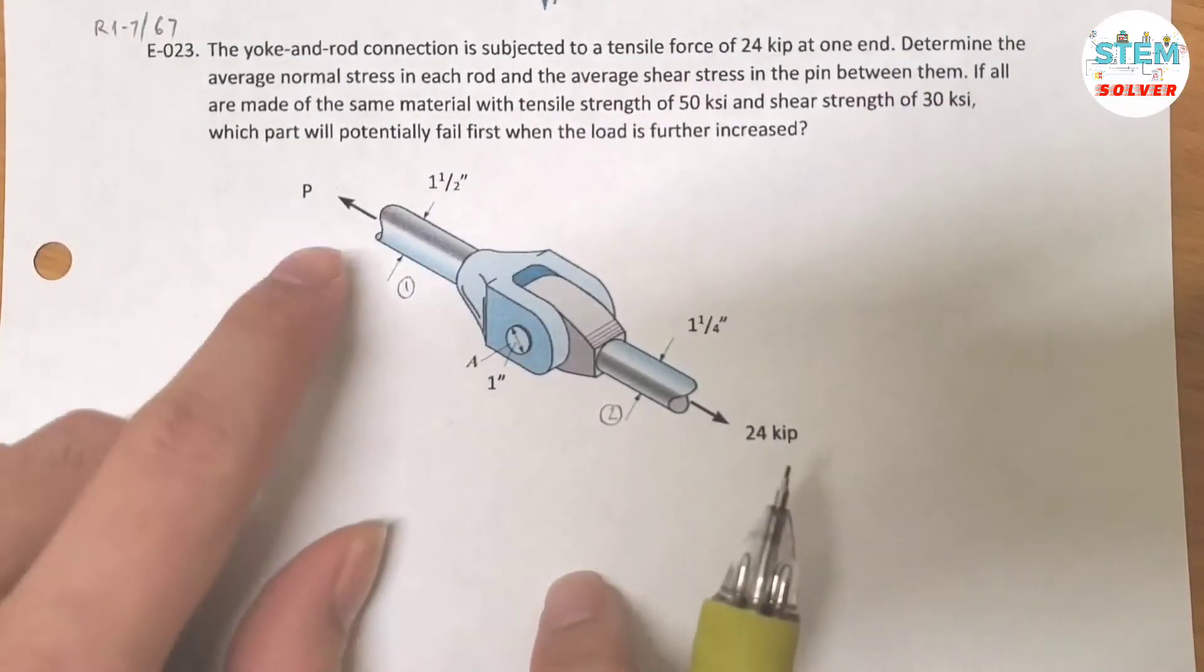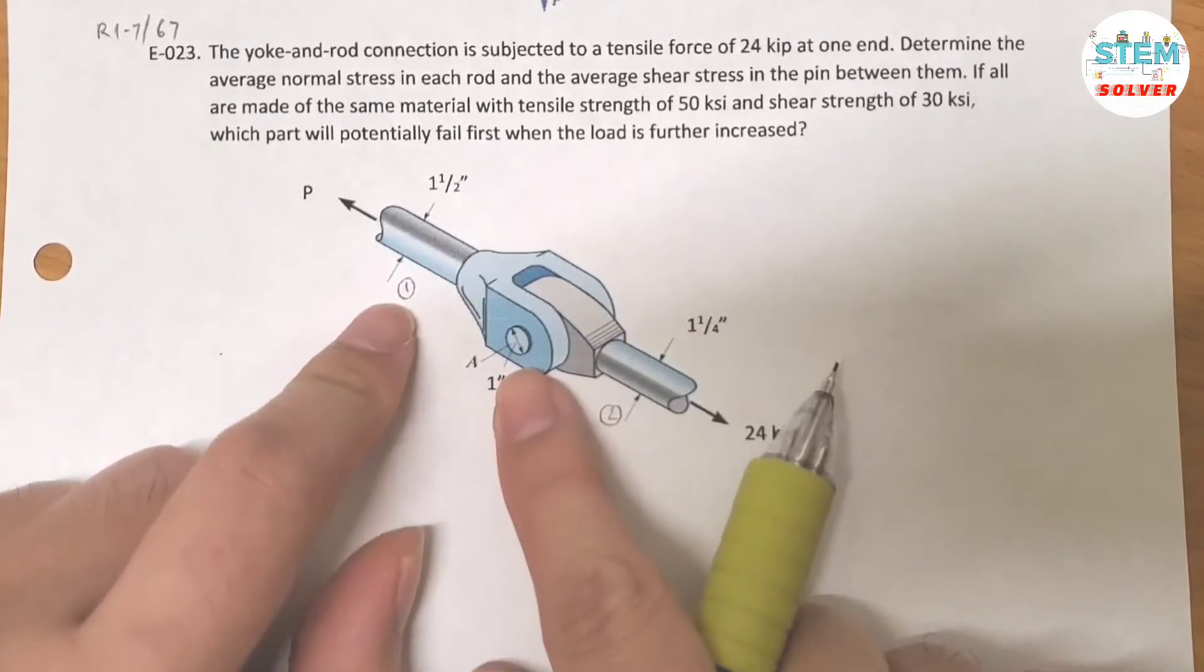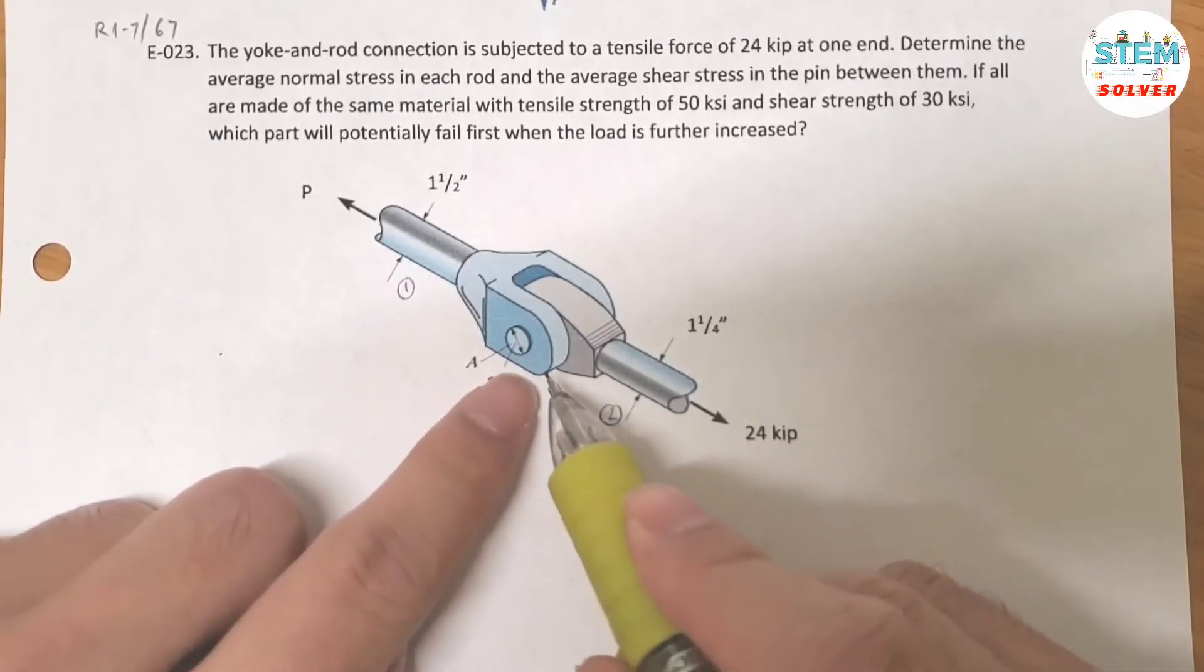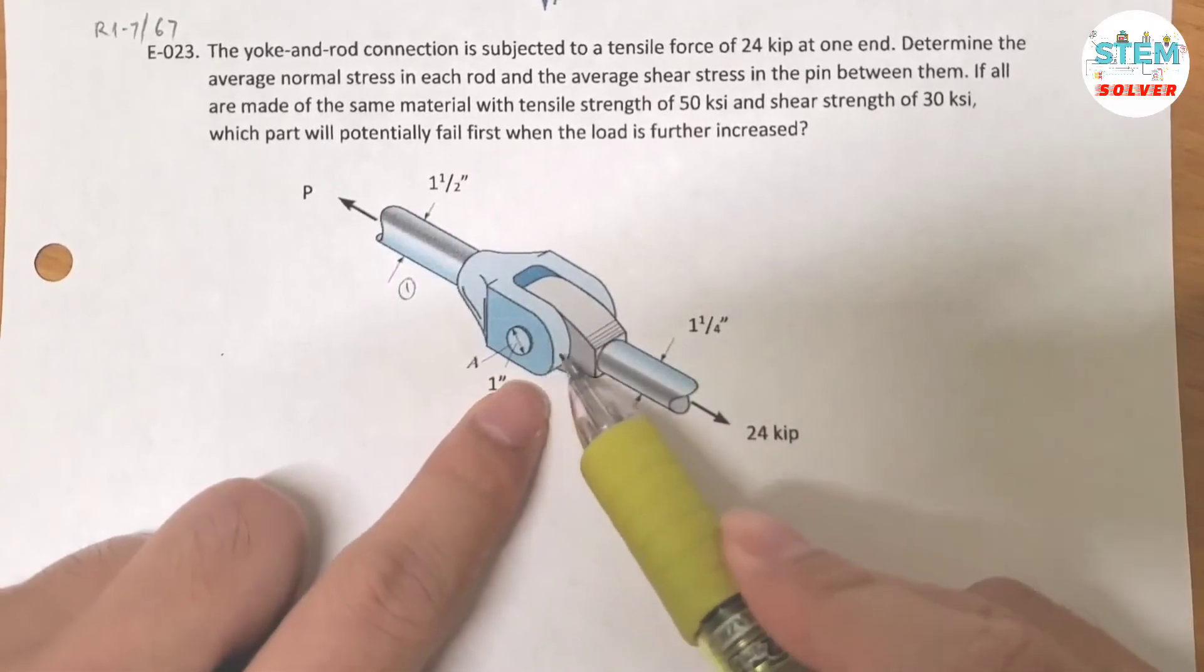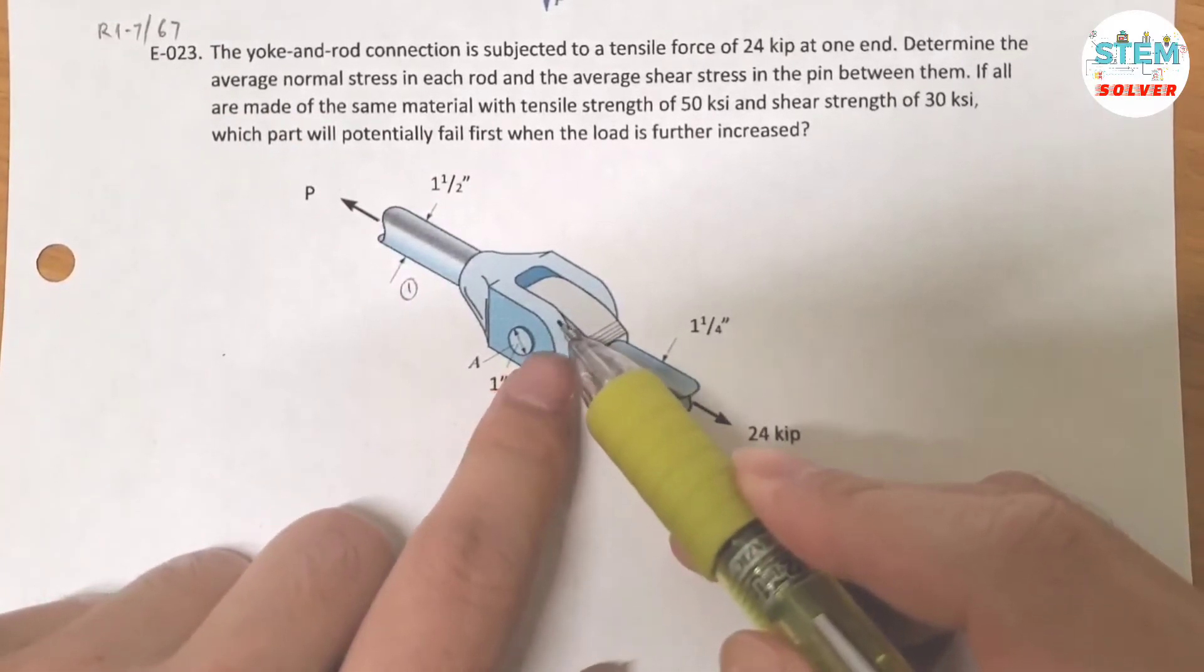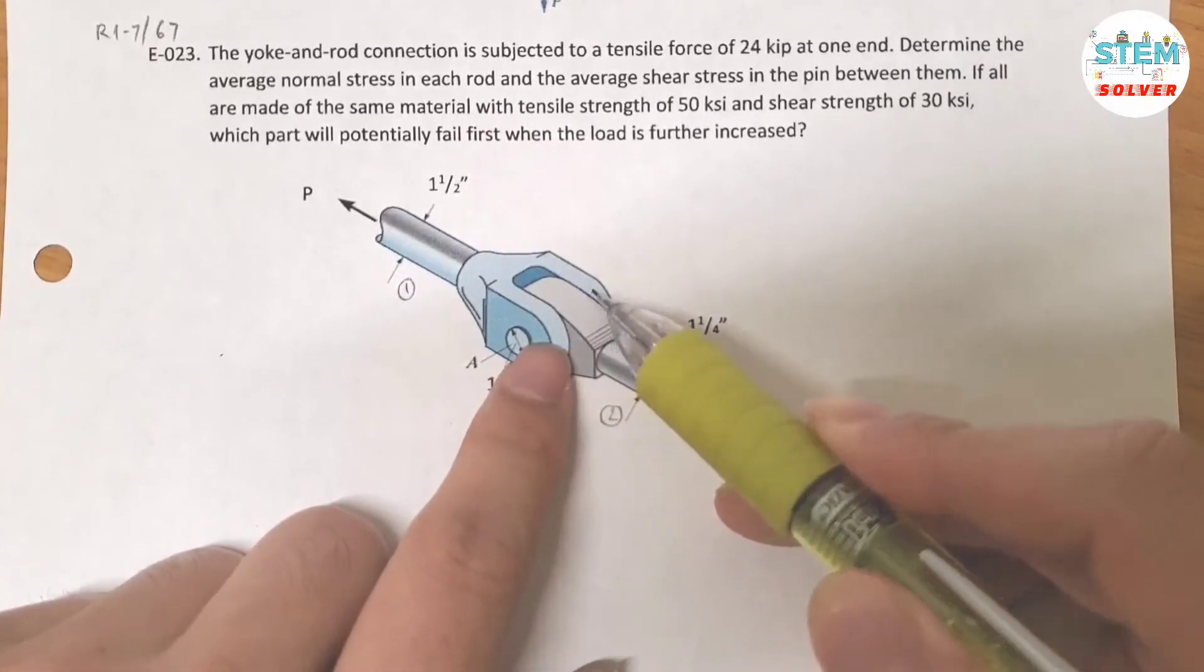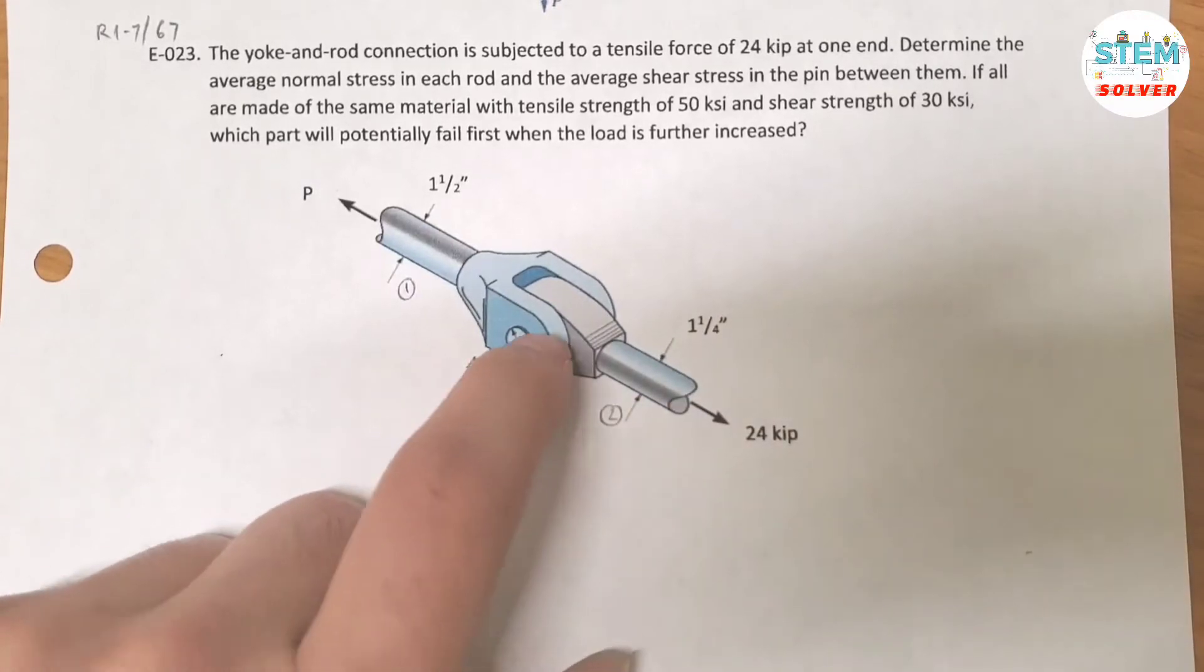Okay, so I'm going to call this rod as rod 1 and this rod as rod 2, and you have a pin right here. So this is a double shear. When you pull this apart, you will have one shear stress this side and the other shear stress on this side. So you have two shear stresses.